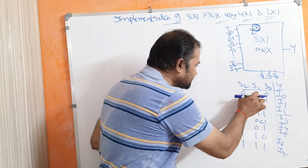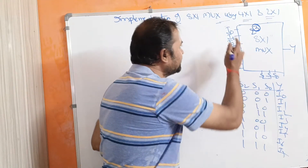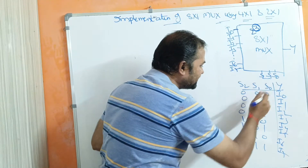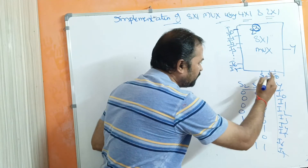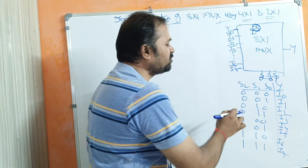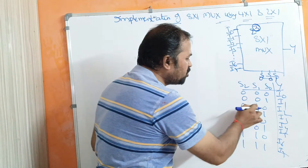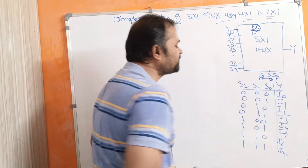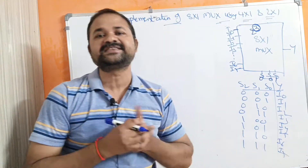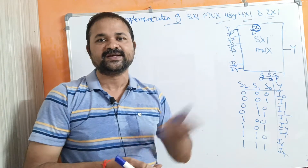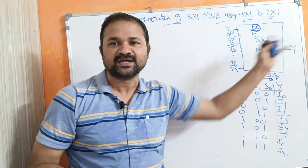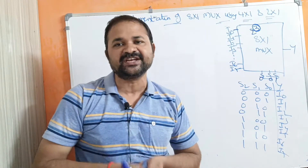If we select 000, then I0 will be selected as the output. If we select 001, then I1 will be displayed as the output. 010 means I2 will be displayed as the output. Likewise, 111 means I7 will be displayed as the output. Which input is displayed as the output depends upon the selection input.